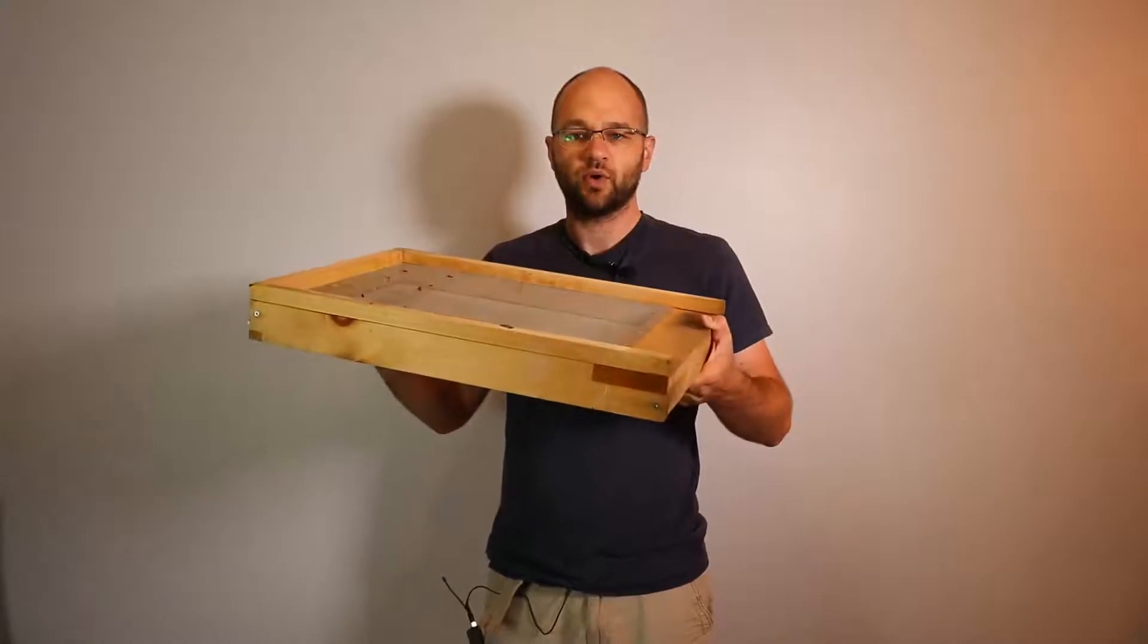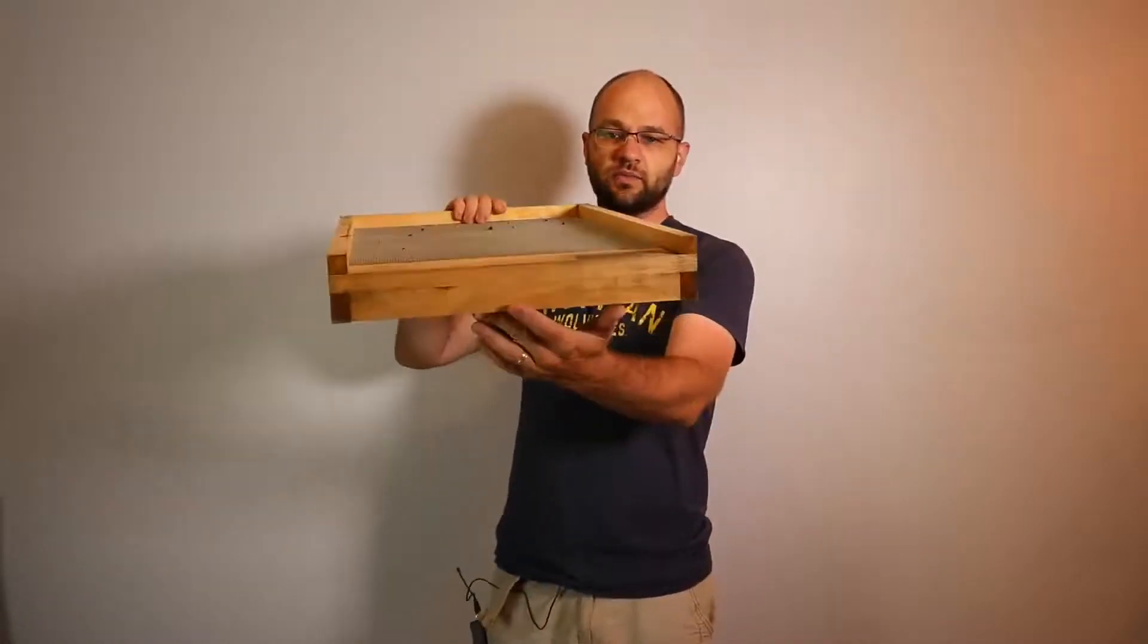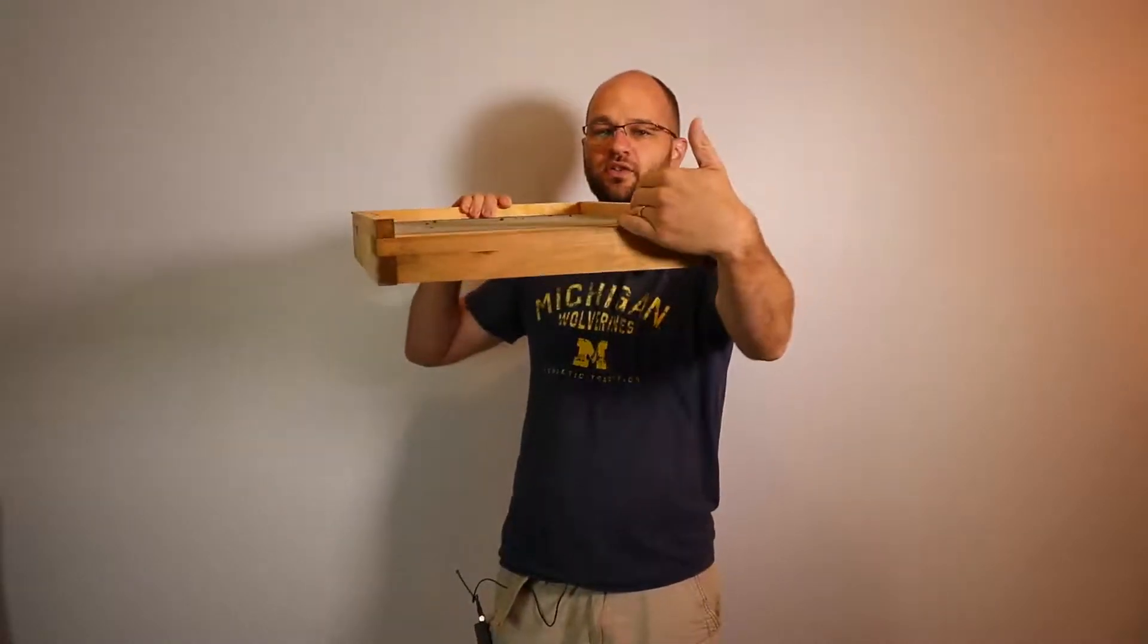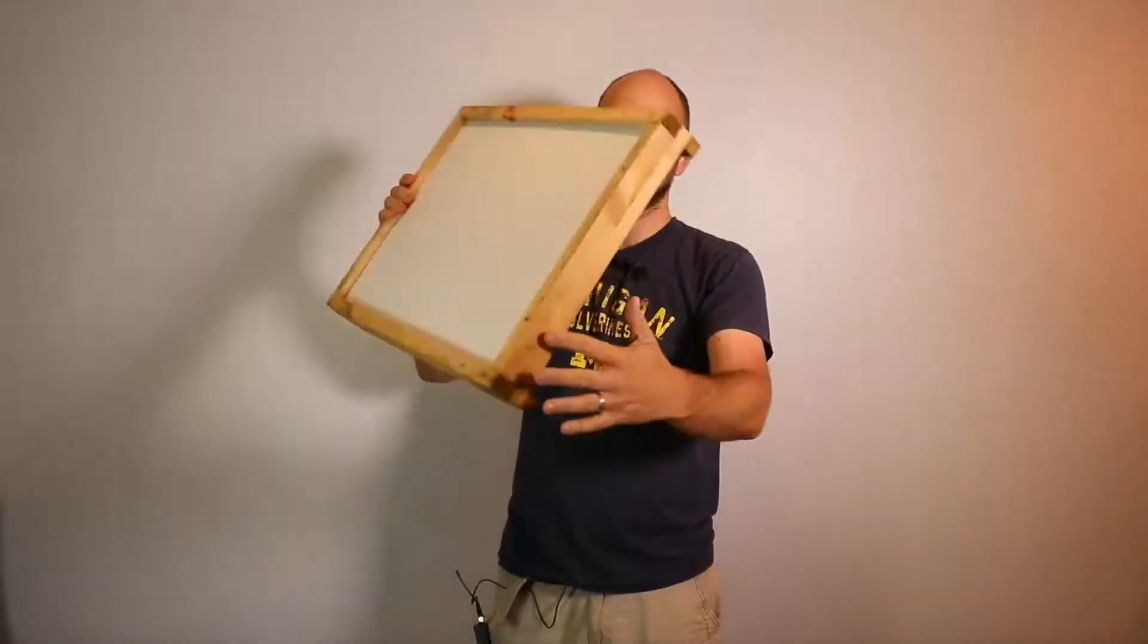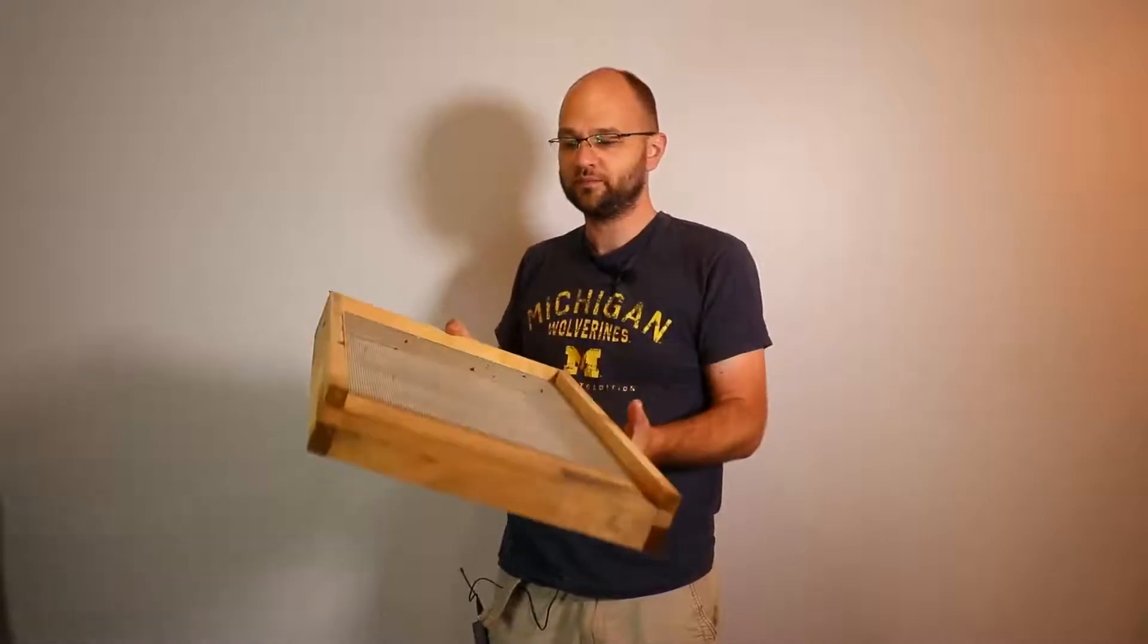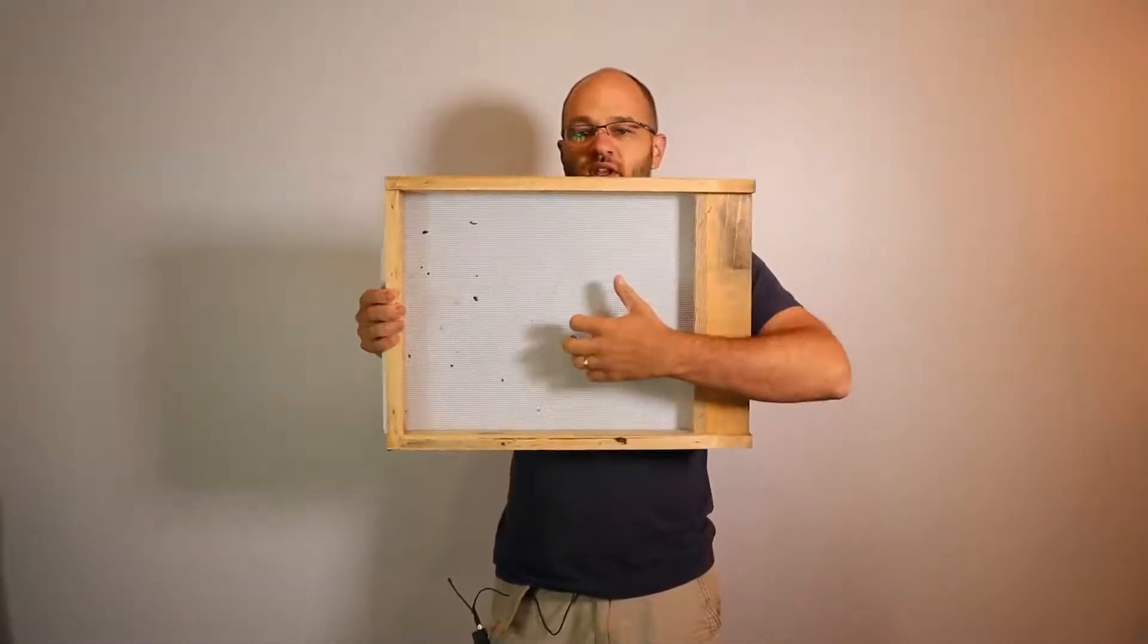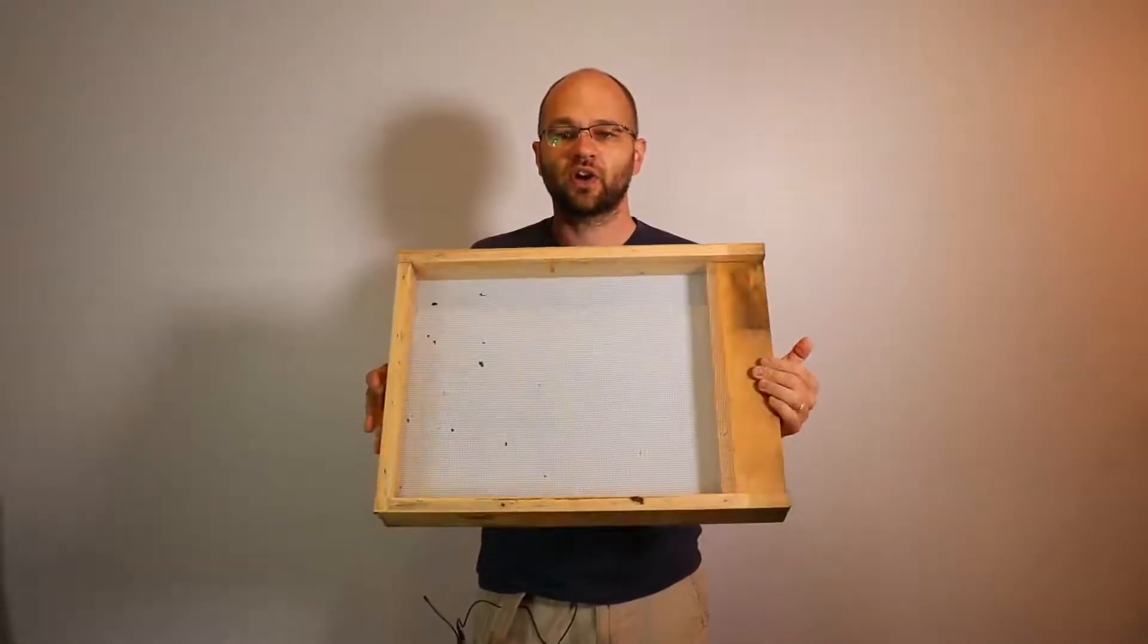Now for the screen bottom board. It's similar in that the hive sits on top and the bees enter through here. It is not reversible, so there's only one size. You'd have to use an entrance reducer on here. The main difference though is that the bottom is a screen. It's a screen made of number eight hardware cloth.